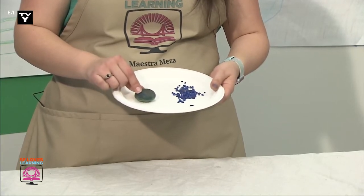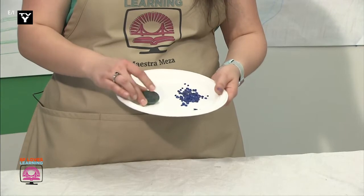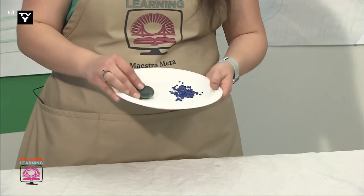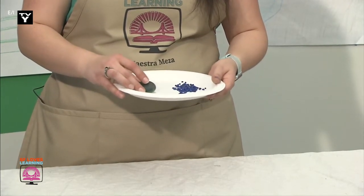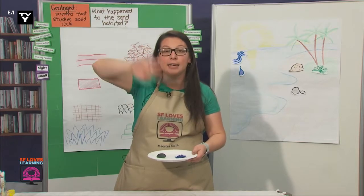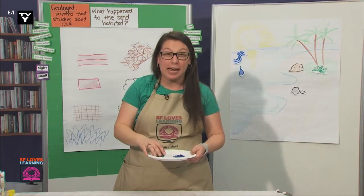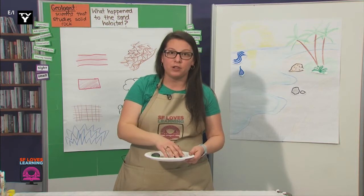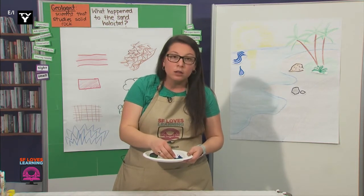I noticed that it was smooth. Many of the cliffs I see by the beach have smooth edges on the sides that end up really jagged. And I have these other rocks that are rough and jagged. I wonder why...